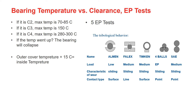There are five types of EP tests: Almen, Falex, Timken, 4-Ball EP, and SAE. Extreme pressure additives are used to enhance the extreme pressure property of grease.